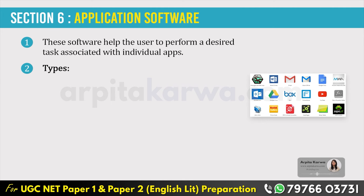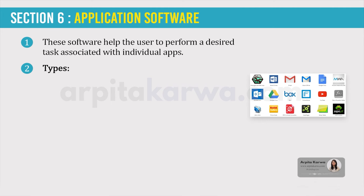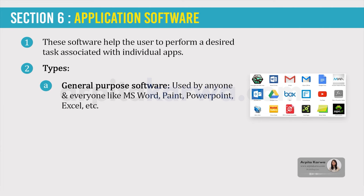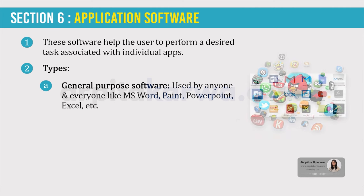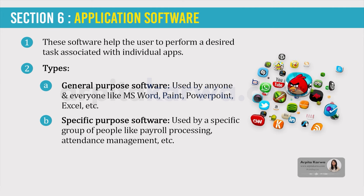Application software is divided into two categories. The first is general purpose software — very generic software like MS Word, MS Excel, Paint, etc. The second category is specific purpose software, which is used by a specific group of people. For example, companies maintain software for payroll, processing salary, and attendance. Those types of software are called Specific Purpose Software.